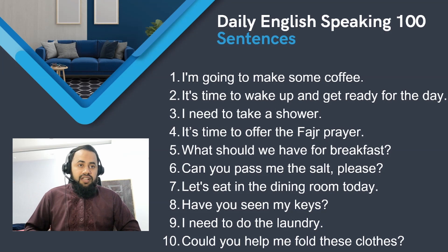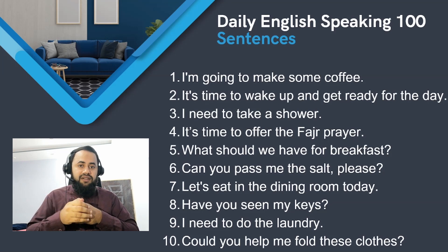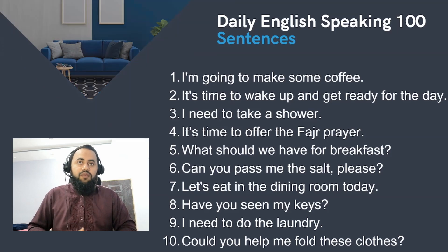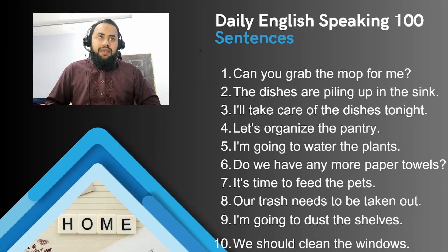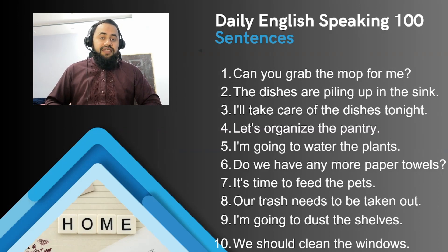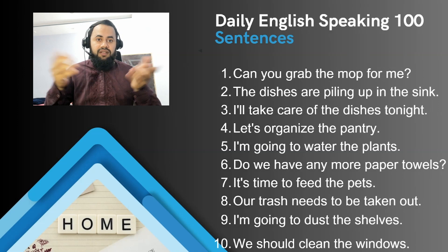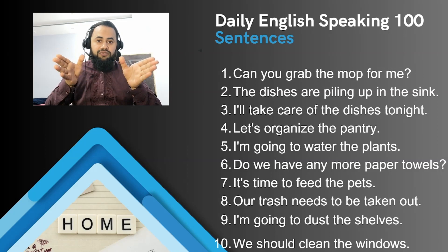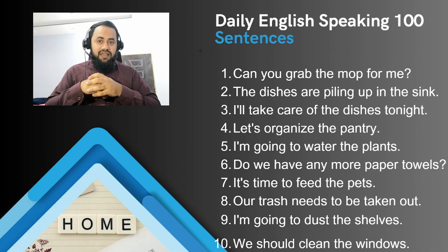When your clothes are unclean you can say 'I need to do the laundry' — you need to clean the clothes. You could also ask: 'Could you help me with these clothes?' — if your clothes are scattered on your bed or couch. The tenth sentence is: 'Can you grab the mop for me?' — when you are going to clean the floor. Next: 'The dishes are piling up in the sink' — for example when you have guests and a lot of dishes have been used.